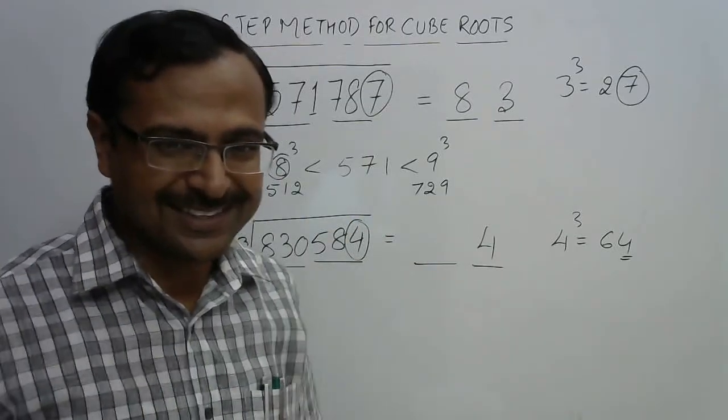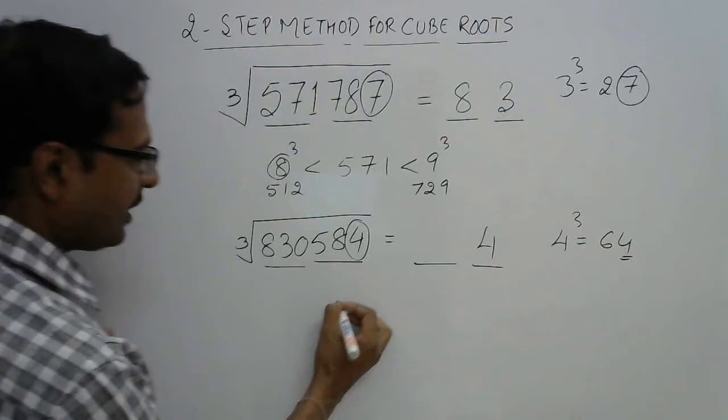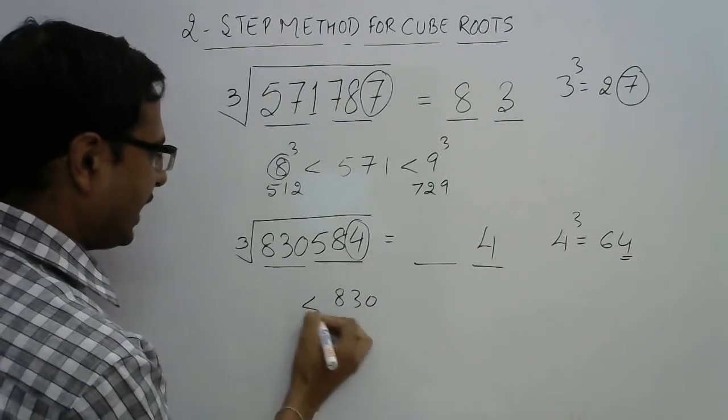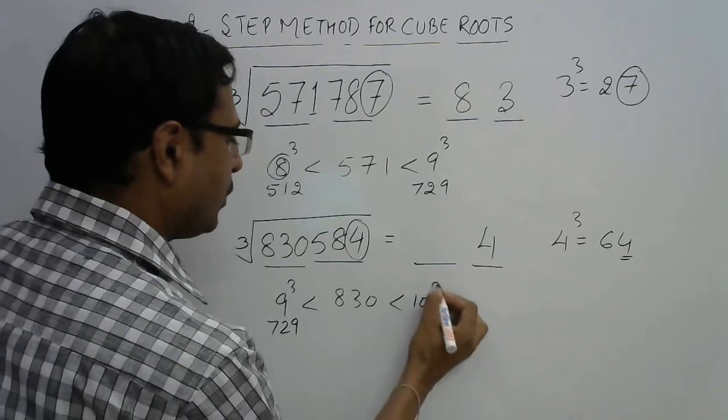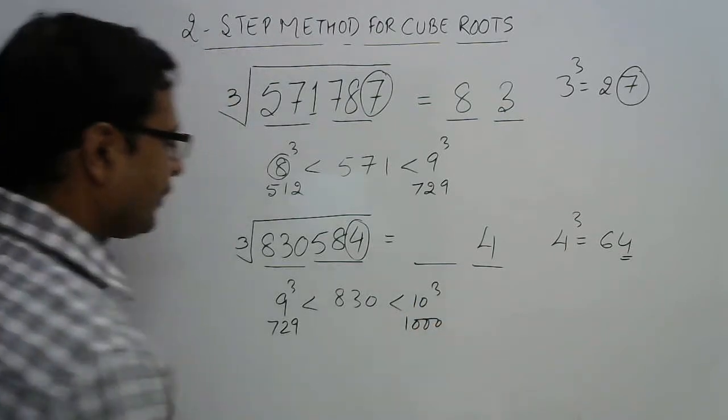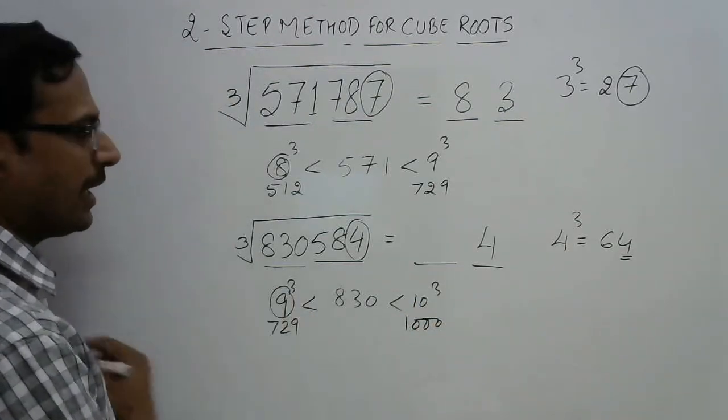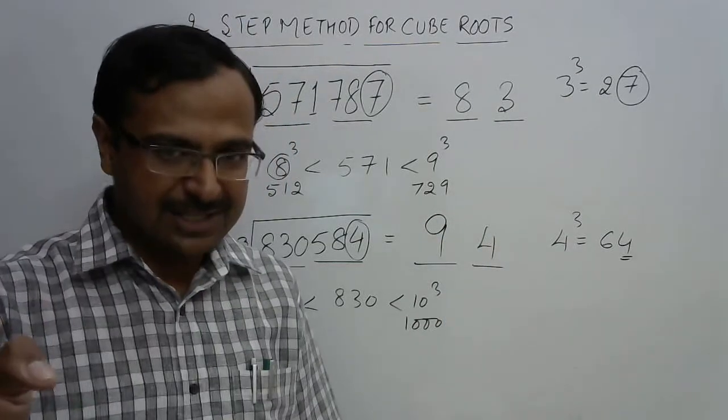I am sure you are going to get the correct answer. Finally, here we have 830, and 830 lies between 9 cube—9 cube is 729—and 10 cube—10 cube is obviously 1000. So which is the smaller number? 9. So 9 will come here, giving you the answer 94.